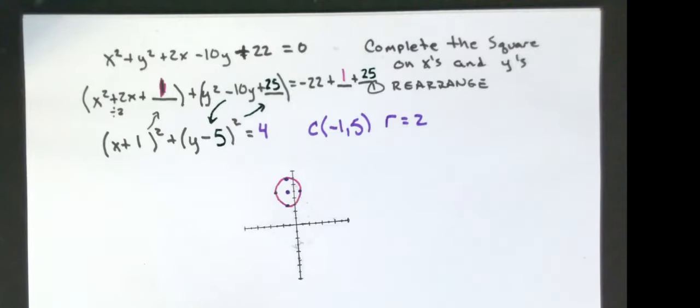So that's one thing you need to be able to do is you'd be able to complete the square. You come up with the equation of a circle. Another thing I can give you is I can give you two endpoints on a diameter.